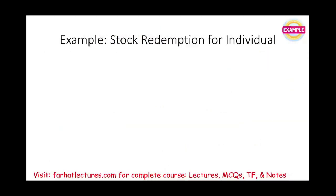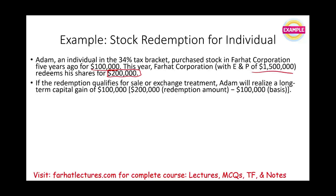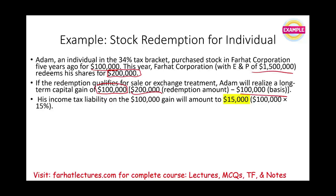Let's take a look at this example from an individual perspective. Adam, an individual in the 34% tax bracket, purchased stock in Farhat Corporation five years ago for $100,000. This year, Farhat Corporation, with an E&P of $1.5 million, redeems his shares for $200,000. If the redemption qualifies for the sale, Adam would realize a long-term capital gain of $100,000 — $200,000 minus the basis. He qualifies under the 15% rate, so his tax bill is $15,000.